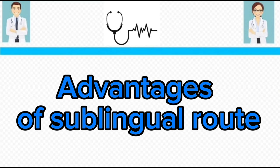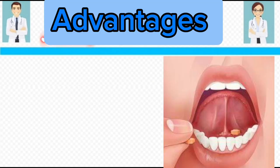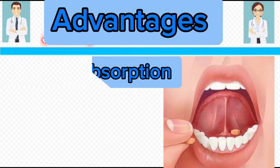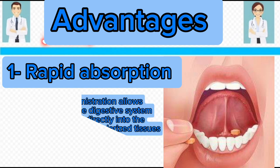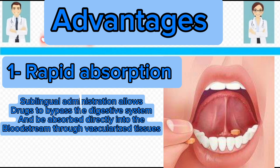Advantages of the sublingual route. First is rapid absorption. The sublingual route of administration allows the drug to bypass the digestive system (GIT) and be absorbed quickly and directly into the blood through the highly vascularized tissues present under the tongue, leading to a faster onset of action as compared to the oral route of drug administration.